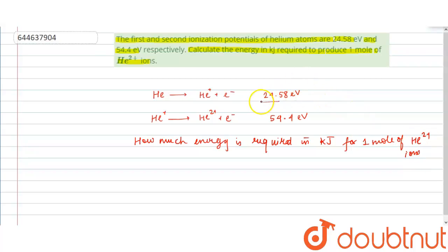So this energy given here are per mole, electron volt per mole. These are the ionization enthalpies of helium to helium+ which is 24.58 electron volt per mole, and helium+ to helium 2+ requires 54.4 electron volts per mole. So we have to convert this to kilojoules.